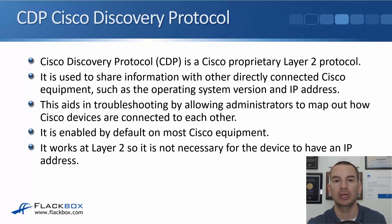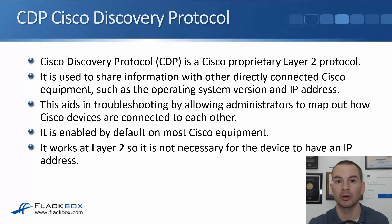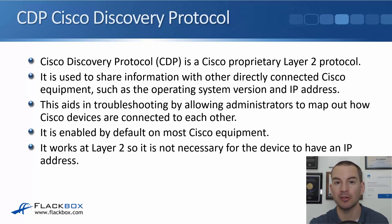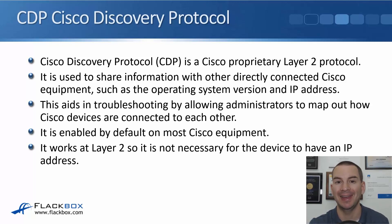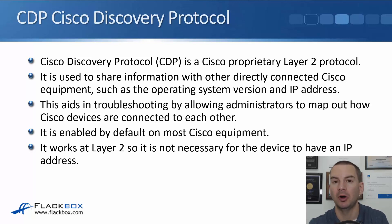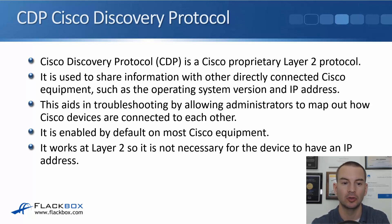For example, say you're in New York and there is a problem in Sydney and you don't know about the network topology there. As long as you can jump onto one device there, you could use Show CDP Neighbors to map out how all the other Cisco devices are connected to each other. So it's a very useful troubleshooting tool. Even if you know what the topology should look like, you can use Show CDP Neighbor to check that the device is there and detected at Layer 2.